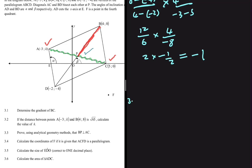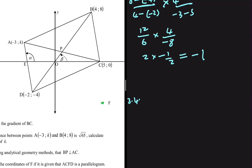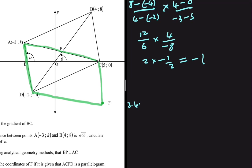Moving to 3.4, we need to calculate the coordinates of F, given that ACFD is a parallelogram. Looking at F on our diagram and connecting the points, we can use translation rather than the midpoint method to find F's coordinates.